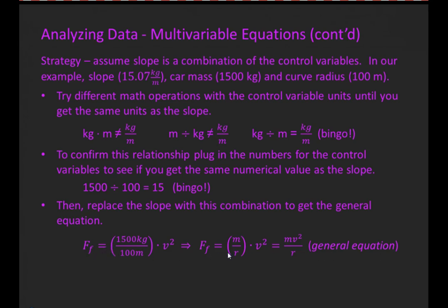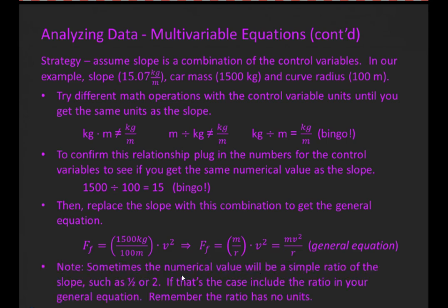Sometimes the numerical value will be a simple ratio of the slope. In other words, the math operation may get the units to match, but when you do the numerical confirmation step, the number might be half the value of the slope or twice the value of the slope. Those are the normal ratios you'll run into. If that's the case, you simply include the ratio in your general equation, and remember the ratio has no units. This is the strategy for coming up with the general equation, and this finishes the section on analyzing data.